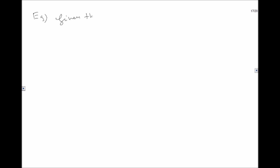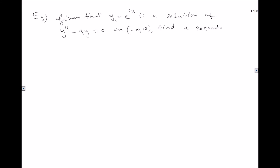Example 1: Given that y₁ = e^(3x) is a solution of y'' − 9y = 0 on the interval (−∞, ∞), find a second solution. First, we check whether the differential equation is in standard form — y'' − 9y = 0 is indeed in standard form.